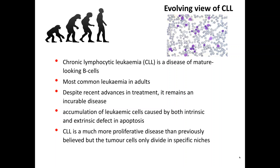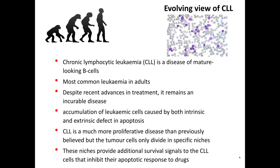These tumor cells only divide in very specific niches — in the lymphoid tissues, in what would in normal B-cell biology be regarded as germinal centers. These niches provide additional survival signals to CLL cells that inhibit their apoptotic responses to drugs, and therefore lead to residual disease post-treatment and relapse in the context of therapy.